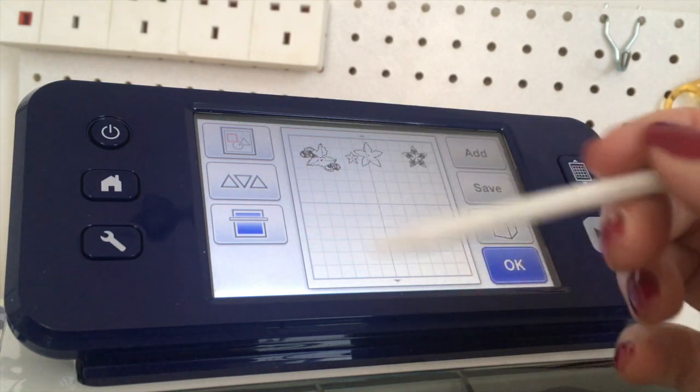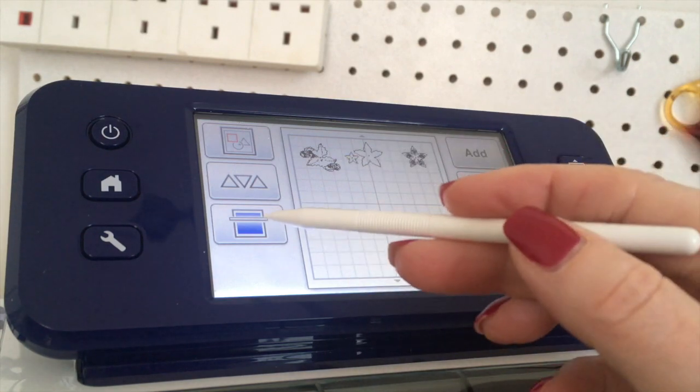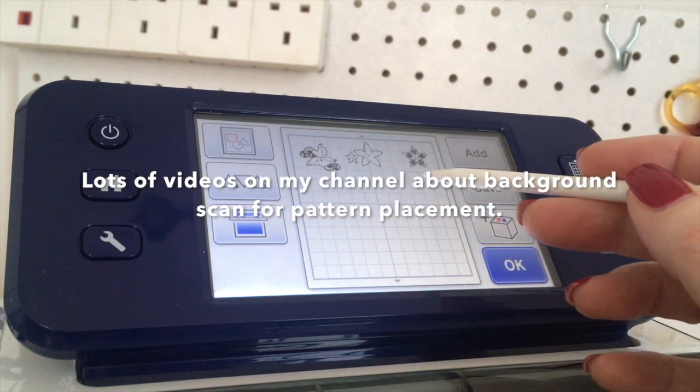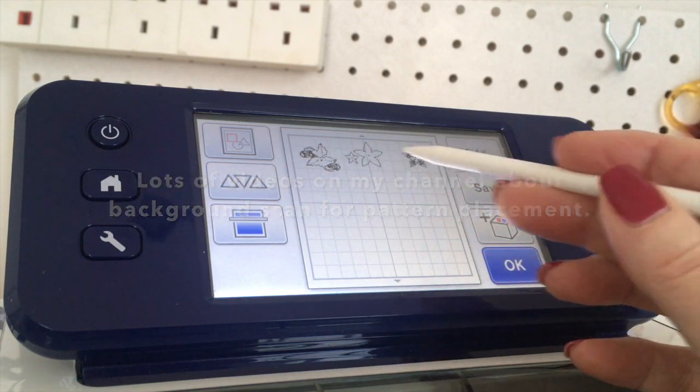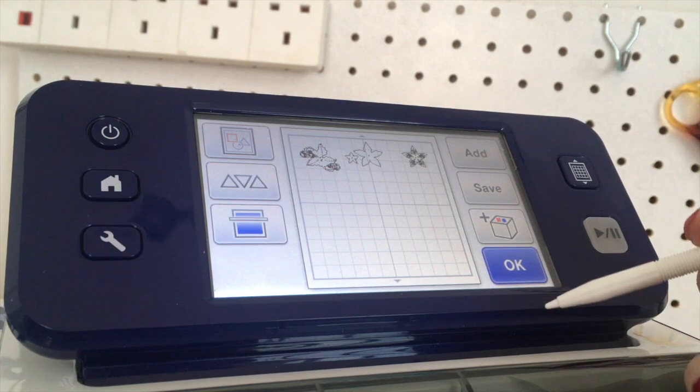Now from here I'm going to load up my mat with my bits of card, and I'm going to do a background scan and cut out the shapes. Then I'll show you how to assemble it all to go with the project.